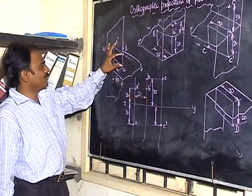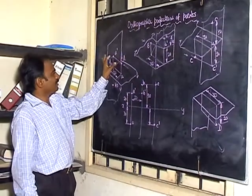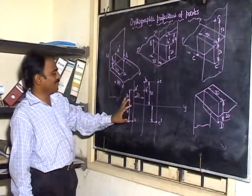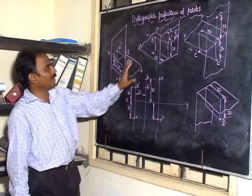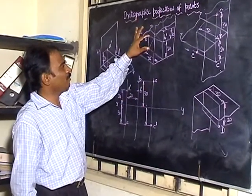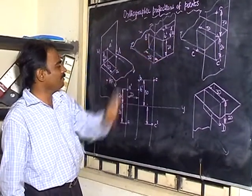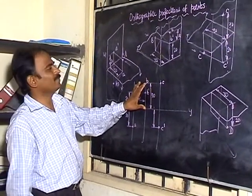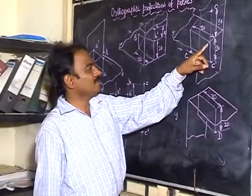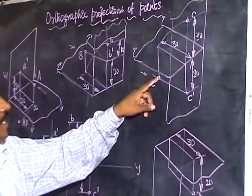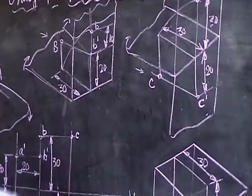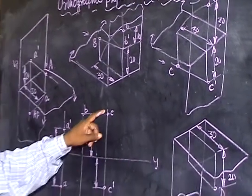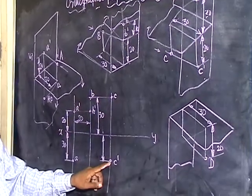Point A is 20mm above HP and 30mm in front of VP. Above HP means it is above XY. In front of VP means it is below XY. The second quadrant, point B, is 20mm above HP and 30mm behind VP. Above HP means above XY. Behind VP means it is also above XY. Point C is the third quadrant, where the point is 20mm below HP and 30mm behind VP. Behind VP — the top view will be above the XY line. Below HP — the front view will be below XY.